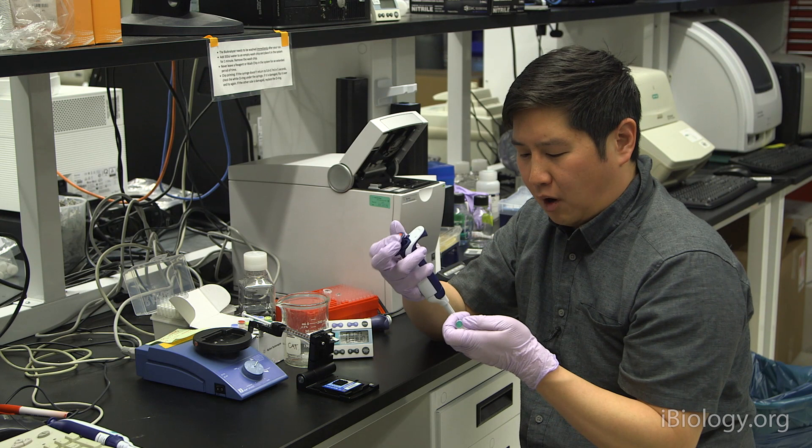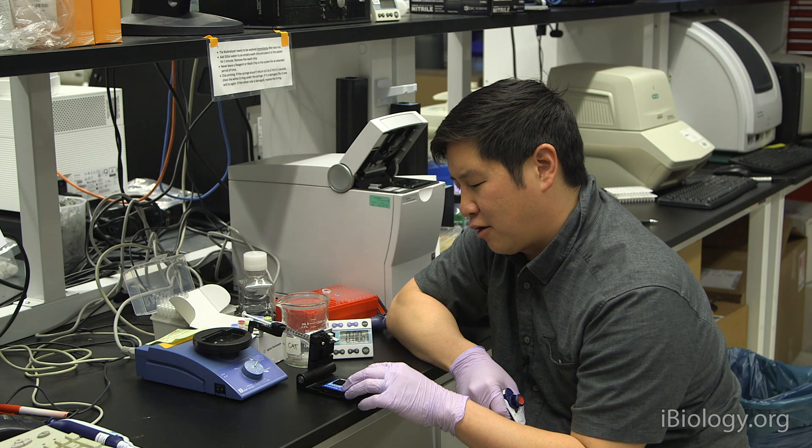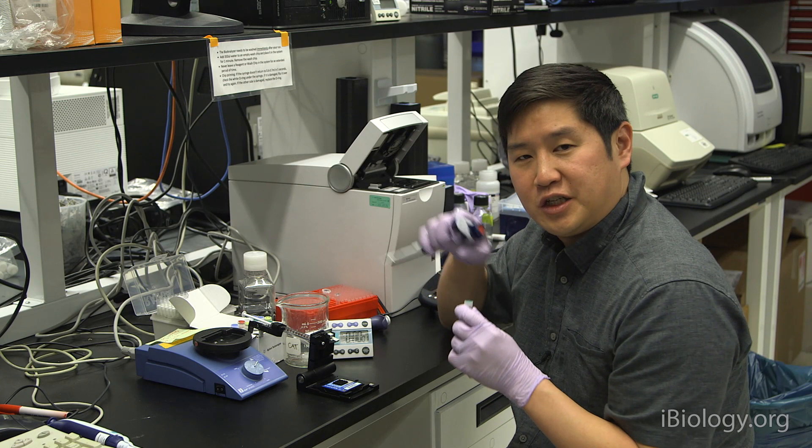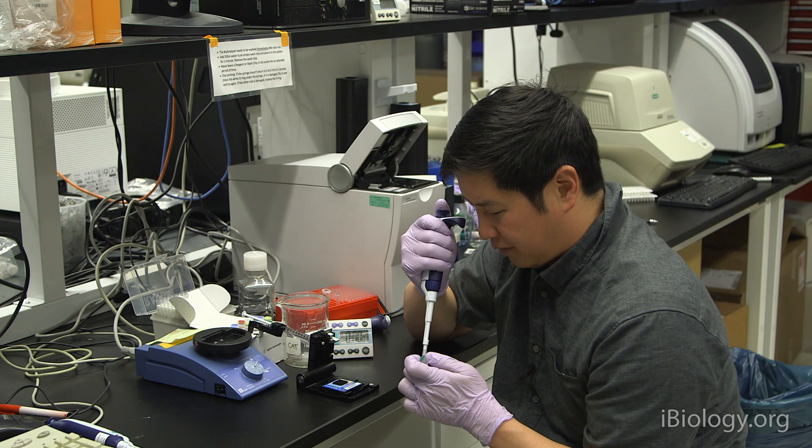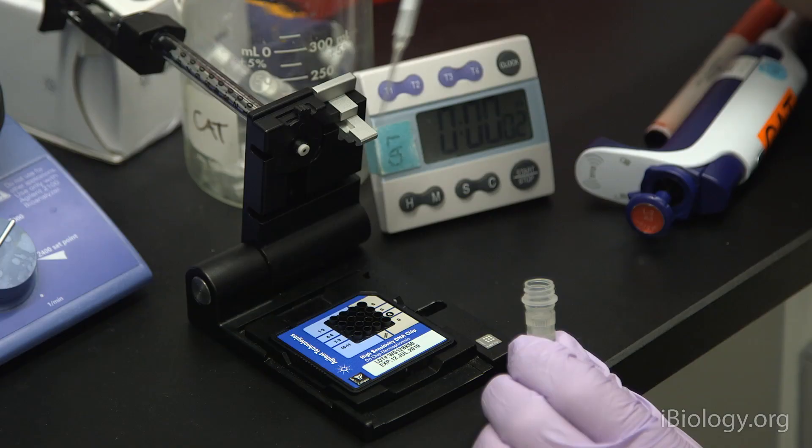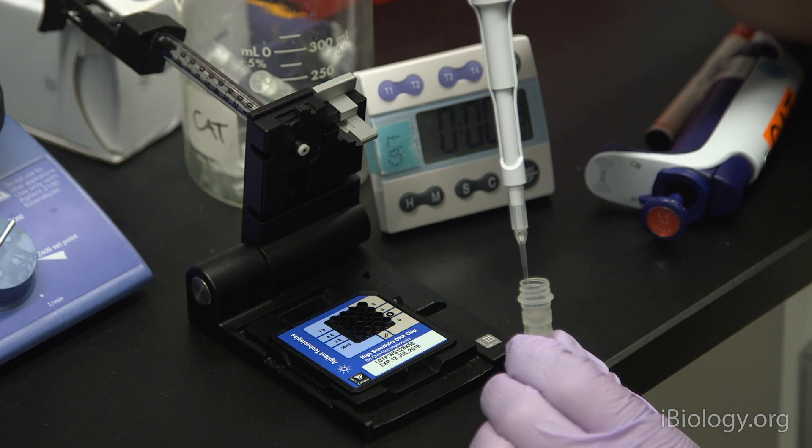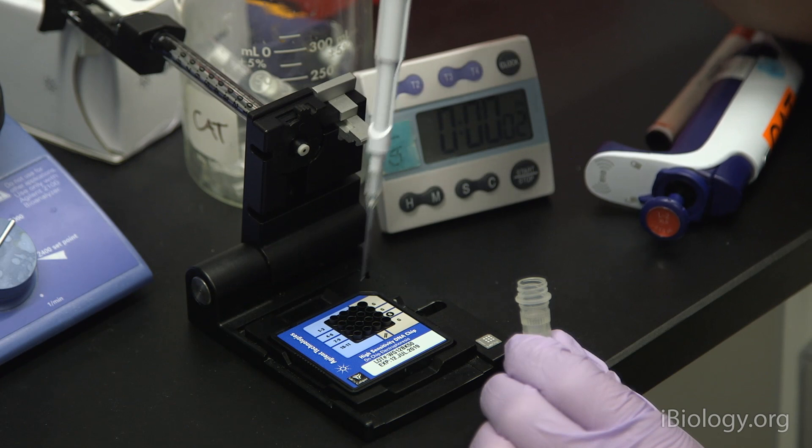Next, we're going to add 5 microliters of a marker solution to each of the sample wells and the ladder wells. These are the 12 wells to the left of the chip. We don't add these to the gel wells that we've added material to already. You can use the same pipette for all of these, as well. This just contains an upper and lower marker that can be used as reference standards to compare your sample to the ladder.